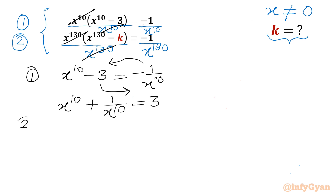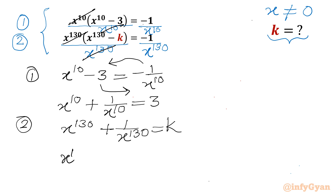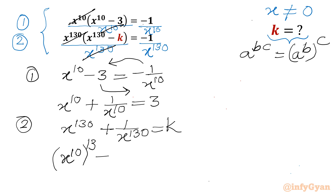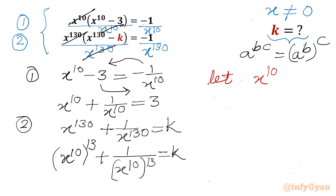Now for the second equation, similarly I can write x^130 plus 1 over x^130 equal to k. I can write 130 as x^10 whole to the power 13, using the property of exponents a^(bc) = (a^b)^c, giving (x^10)^13 plus 1 over (x^10)^13 equal to k. Now let us assume the substitution: let x^10 equal to a.